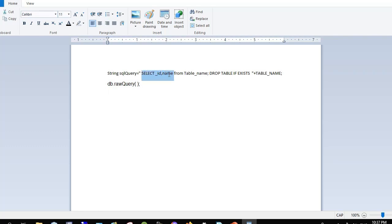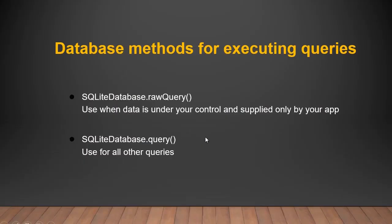First it will get the ID and name from your table, and after the semicolon — which is considered a separate SQL operation — it will drop the table from your database. If the data is not under your control, use the query method. As a developer, I recommend using the query method instead of raw query, because query is more secure than raw query.